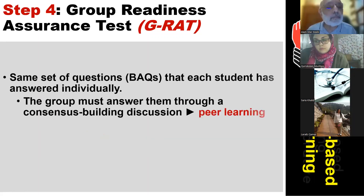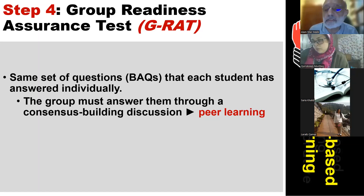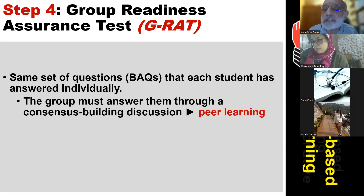Step four is the group readiness assurance test. The same set of questions that each student answered individually must now be answered by the group through a consensus-building discussion. This is the stage where the group discusses each question, comes to a consensus, and peer learning takes place.